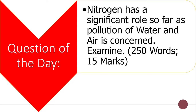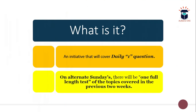So the sanction comes with substantiation. For those who are seeing our video for the first time, this is an initiative in which we daily cover one question, and on alternate Sundays we take your one full-length test of the topics covered in the previous two weeks. So you get six questions in a week, and on alternate Sundays we take your full-length test of 15 to 20 questions.